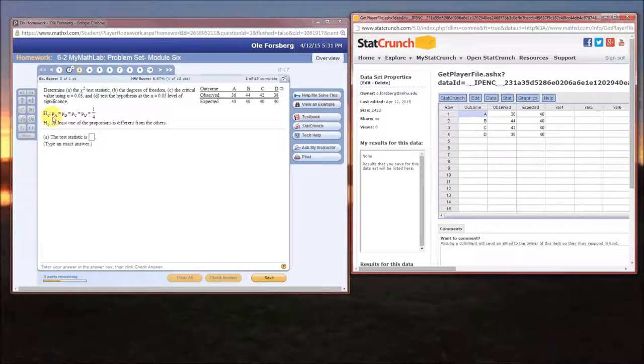The null hypothesis is that they're all equally likely in terms of their outcomes. That's what the expected values say. The expected number of As is 40, the expected number of Bs is 40, Cs is 40, Ds is 40. We observed 36 As, 44 Bs, 42 Cs, 38 Ds.